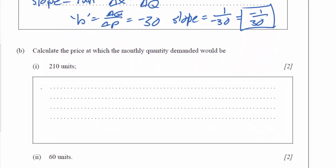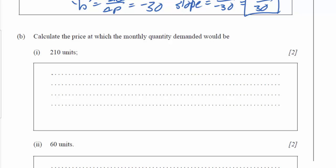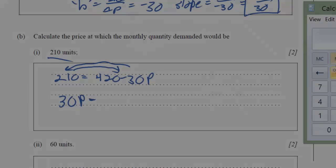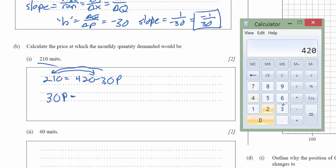The next problem asks us to calculate the price at which the monthly quantity demanded would be 210 units. So we just plug in 210 for QD and solve for P. So I can use my equation and say that 210 equals 420 minus 30 times the price. Let's isolate the 30 over here. So I can say 30P equals, I'll move the 30 over here, and I'll move the 210 over here, subtract 210 from 420. I've got 30P equals 420 minus 210.